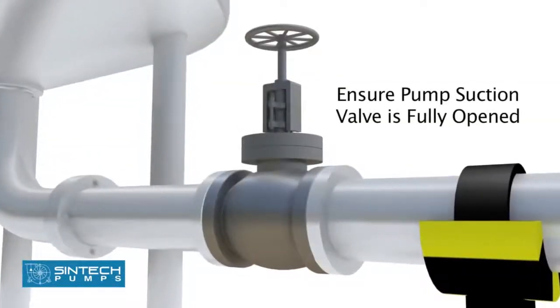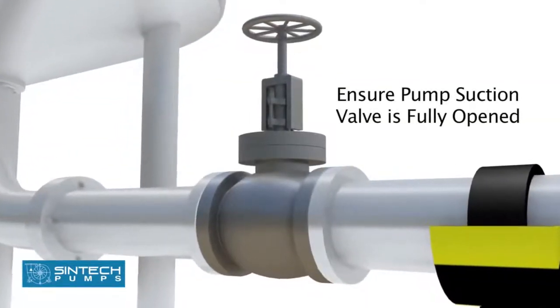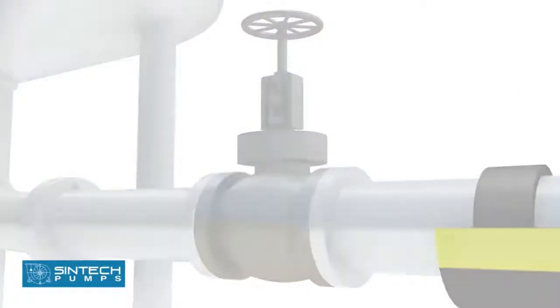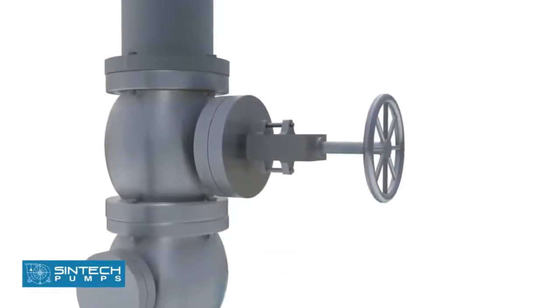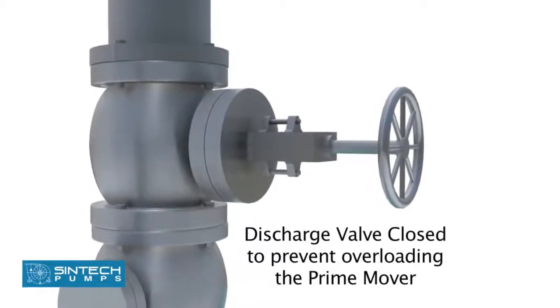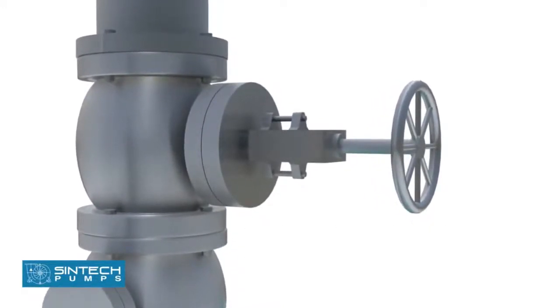Place the coupling guard and tighten the bolts. Ensure that pump suction valve is fully opened and all joints are checked for any leakage. The opening of discharge valve is kept closed as this prevents the overloading the prime mover.